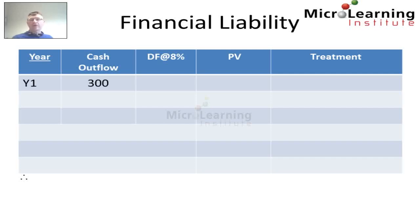At the end of the first year PingWay must issue a check for $300,000 in respect of this financial liability. After one year at 8% this future cash flow is discounted by a factor of 0.93 from the table, meaning that in present value terms the future payment in one year of $300,000 is equivalent to a payment right now of $279,000.